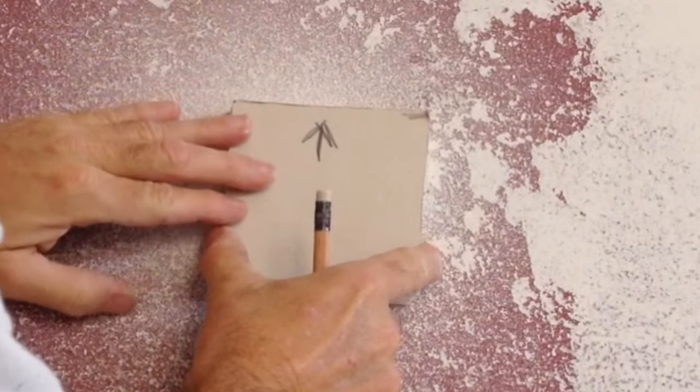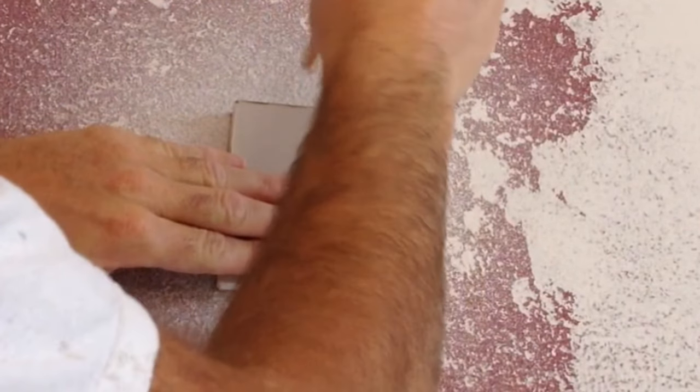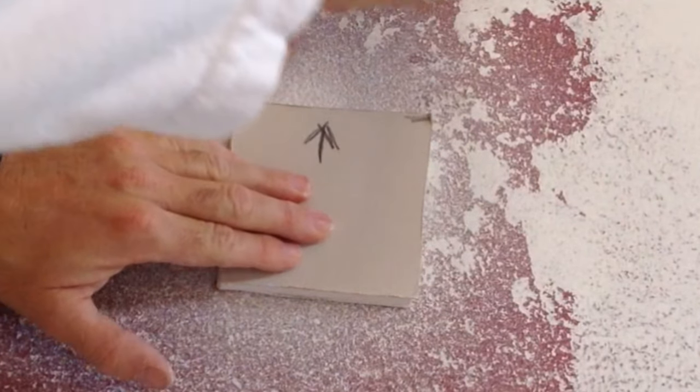So what I did, this is a pro trick right here, is I cut a little bit bigger piece of drywall than the hole in the soft spot and I'm going to trace around it to get a perfect cut.